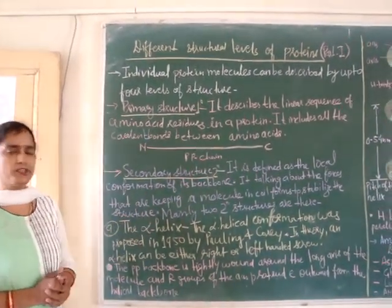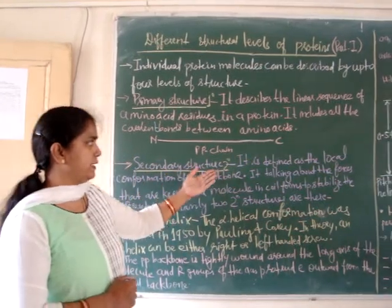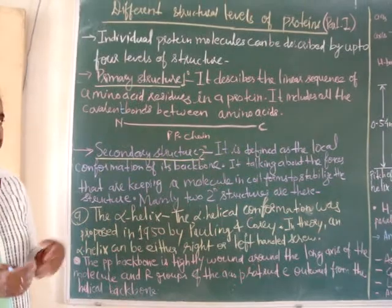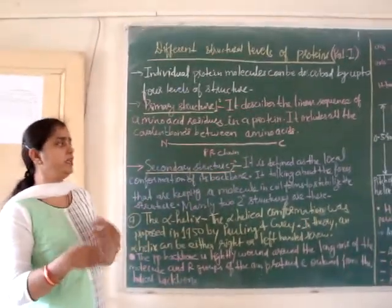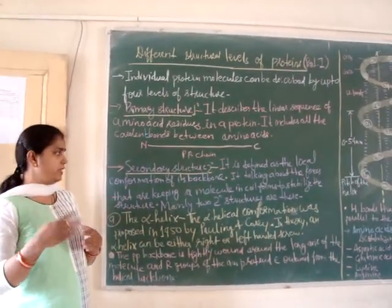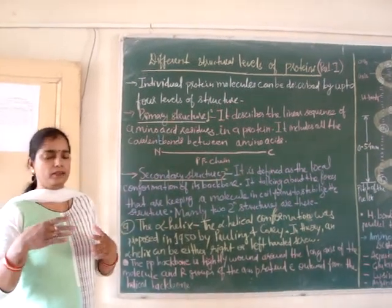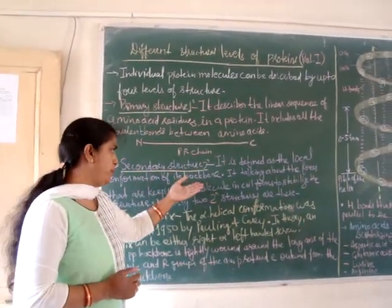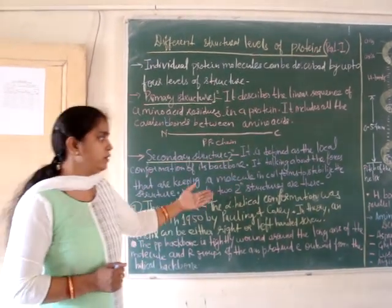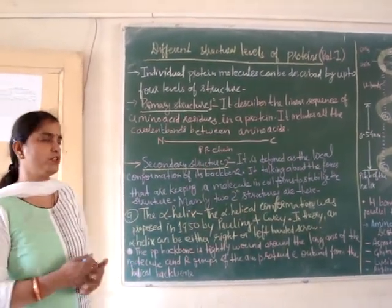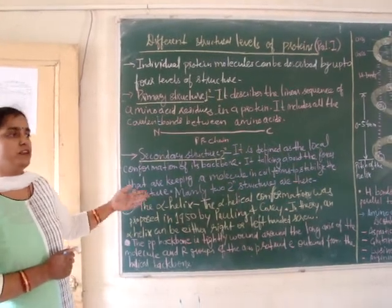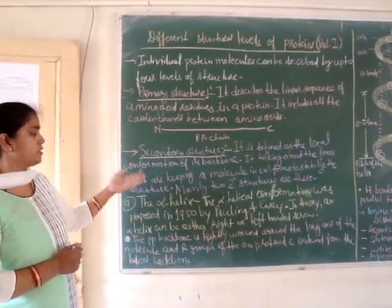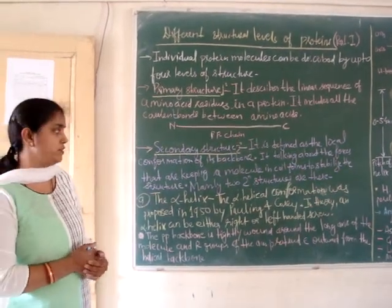The secondary structure of protein, designated as 2°, is defined as the local conformation of its backbone. The linear structure can be folded back on itself to form secondary structures, and the stabilizing force that keeps the molecule in a coiled formation is hydrogen bonds.